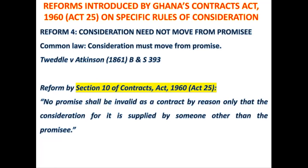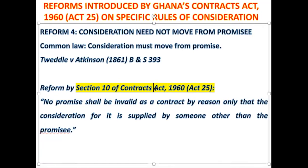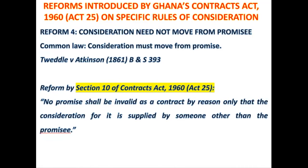That is the effect of Section 10 of Ghana's Contracts Act of 1960 Act 25, which says that no promise shall be invalid as a contract merely because the consideration for it is supplied by someone other than the promisee. In other words, even if consideration did not move from the promisee, in Ghana you can still enforce the promise.